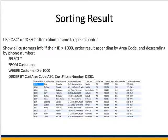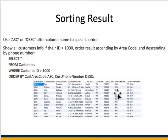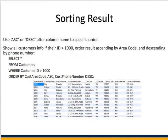You can also specify whether results are returned in ascending or descending order using the keywords ASC or DESC. For instance, this query gets customers whose ID is greater than 1000, then orders area codes in ascending order and phone numbers in descending order. That is the result of this query.